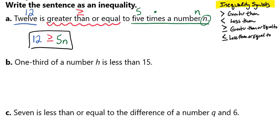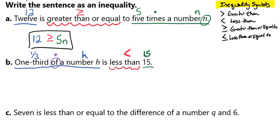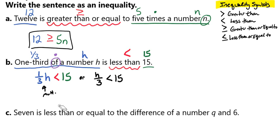Let's take a look at another example. It says '1 third of a number h is less than 15.' In math, the word 'of' means we're going to multiply. It says 'of a number,' and that number is h. 'Less than' is one of our symbols, and then 15. So when we write that out, we get 1/3 times h — so (1/3)h < 15. This could also be written as h/3 < 15, because we just multiplied the 1/3 times the h. Either way would be considered correct.